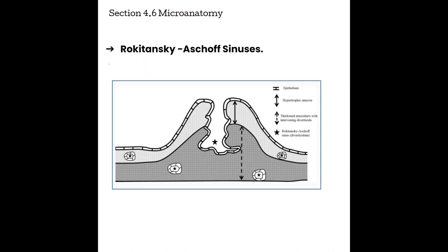One prominent feature of biliary anatomy relevant to pathology is the presence of Rokitansky-Aschoff sinuses. The inside of the gallbladder has a very wrinkly appearance — called rugae — with little pouches of epithelium. When an invagination of the lining reaches all the way down to the muscularis level, we call that a Rokitansky-Aschoff sinus. This is important for adenomyomatosis — a pathology frequently asked about on board exams — where crystals get caught in these invaginations and produce a very particular ultrasound appearance.